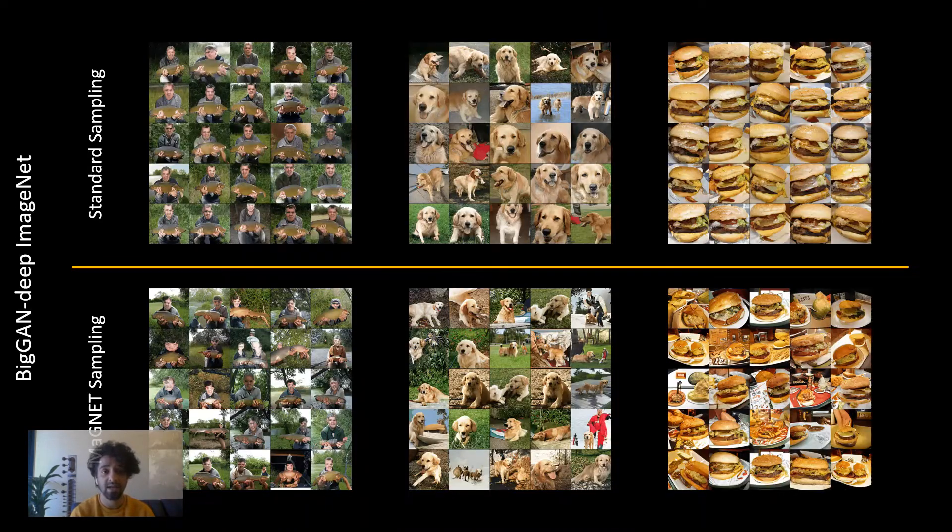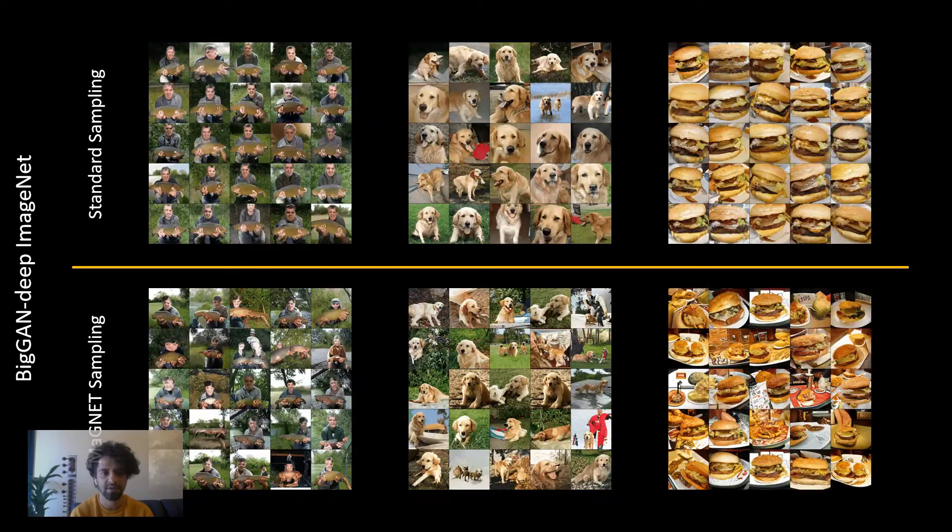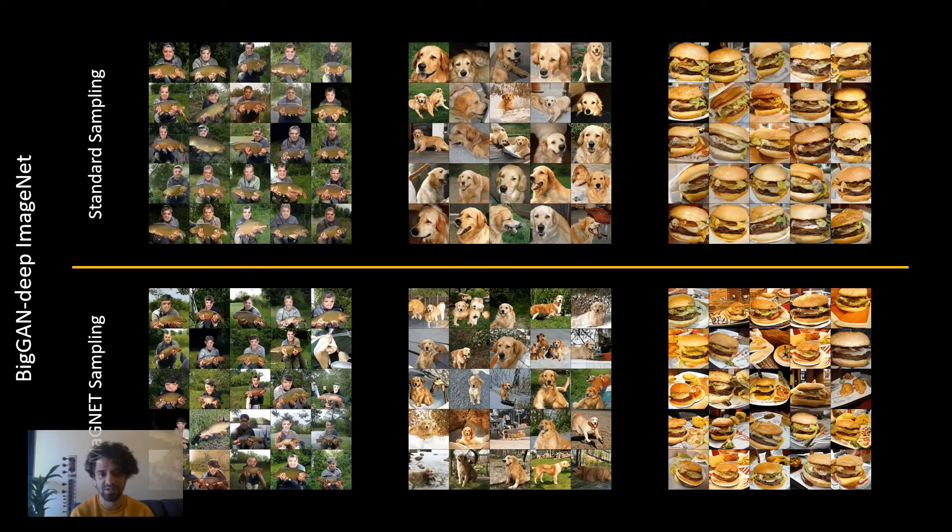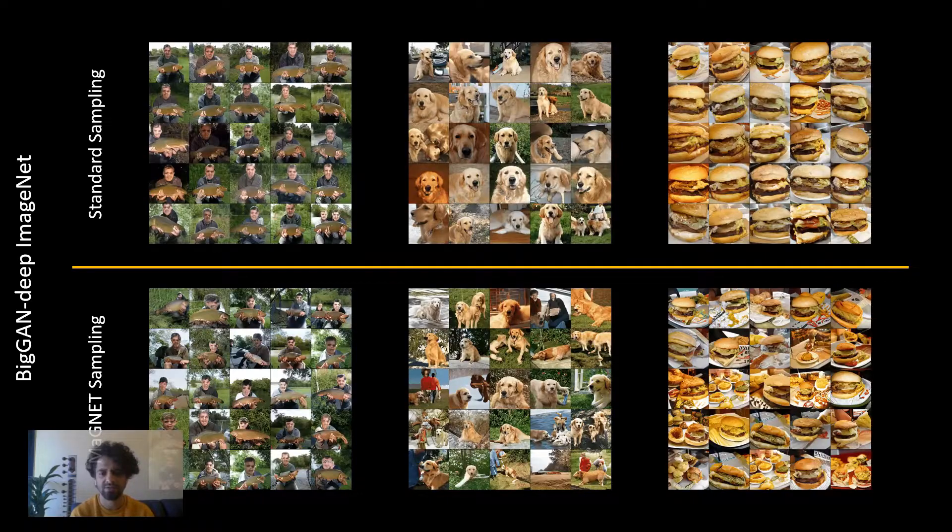For BigGAN, MAGNET can be used to uniformly sample while conditioned on different ImageNet classes. MAGNET yields a very diverse set of samples which could possibly be used for data augmentation and downstream applications.